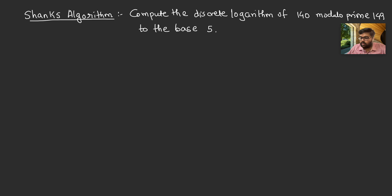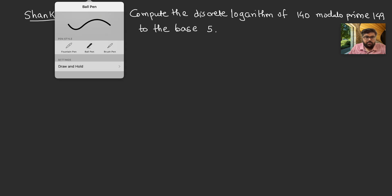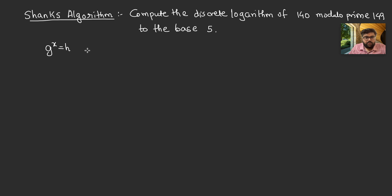In this video we are going to see an example of the Shanks algorithm, also known as the Shanks Baby-Step Giant-Step algorithm, to find a discrete logarithm. We have to solve g^x ≡ h (mod p), and x is called the discrete logarithm of h to the base g, written as x = log_g(h) mod p.